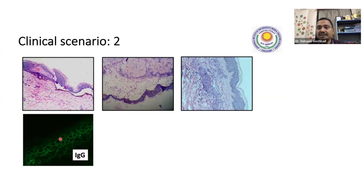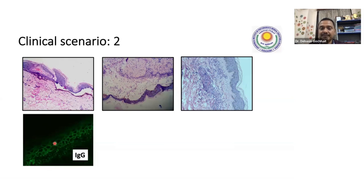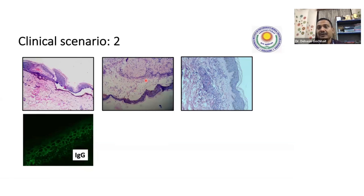To confirm pemphigus, you will have a typical fish net pattern. Here you can see that IgG is deposited around each and every cell in a fishnet kind of pattern. Fish net pattern in the epidermis with IgG indicates pemphigus disease — there are subtypes like pemphigus vulgaris and pemphigus foliaceus which we will come to later. Here is another vesiculobullous disorder: we don't have much inflammatory cells here.